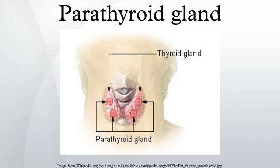Structure: The parathyroid glands are two pairs of glands usually positioned behind the left and right lobes of the thyroid. Each gland is a yellowish-brown flat ovoid that resembles a lentil seed, usually about 6 mm long and 3–4 mm wide, and 1–2 mm anteroposteriorly. There are typically four parathyroid glands.